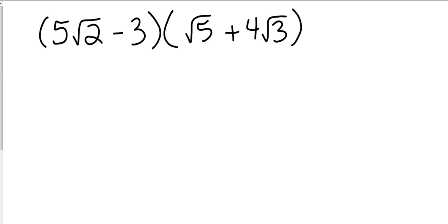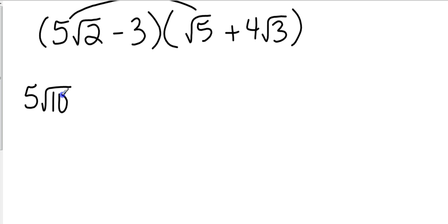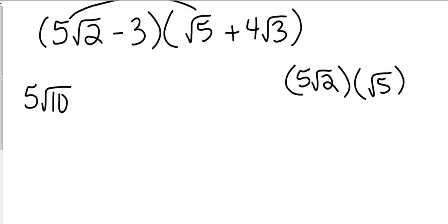What do you recognize right away? Parentheses. But what's inside of them are binomials, which means we're going to have to FOIL — First, Outside, Inside, Last. So we're going to do first times first. What is five square roots of two times the square root of five? Five square roots of ten. What is five square roots of two times four square roots of three? Twenty square roots of six. Positive.